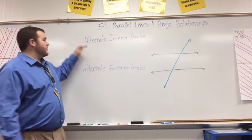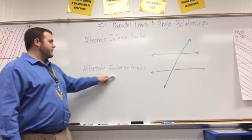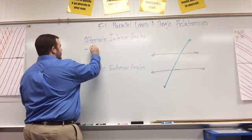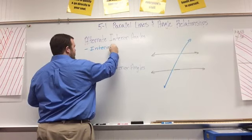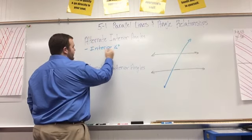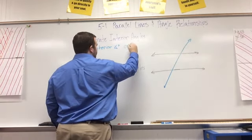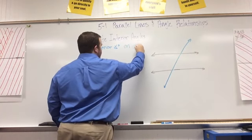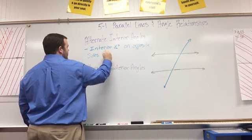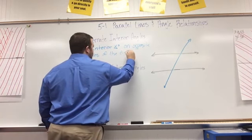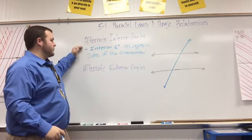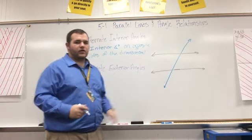The next two definitions are alternate interior angles and alternate exterior angles. Alternate interior angles are interior angles on opposite sides of the transversal. One important thing to know: if our lines are parallel, alternate interior angles are always congruent.